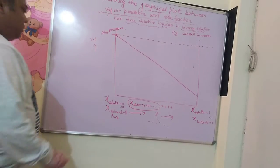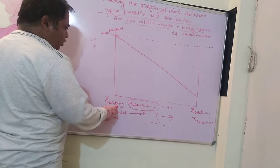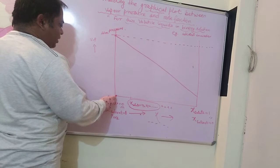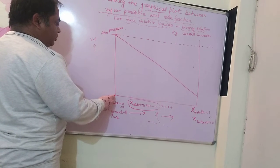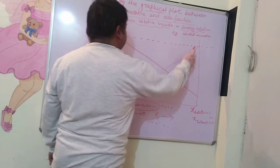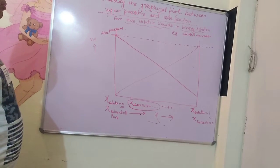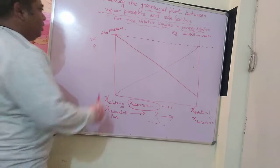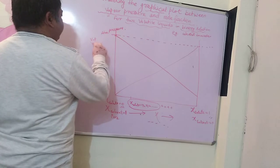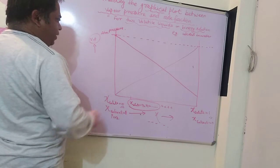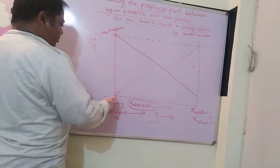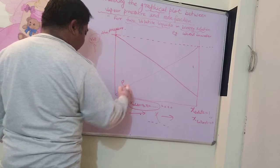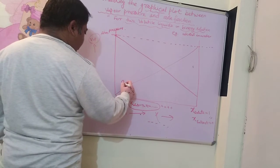As solute is added, its vapour pressure increases. If we consider the vapour pressure of both components, we can write P for solute separately. The vapour pressure of solvent decreases while the vapour pressure of solute increases as more solute is added.